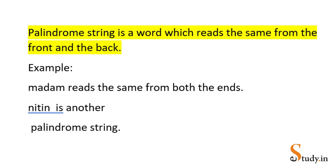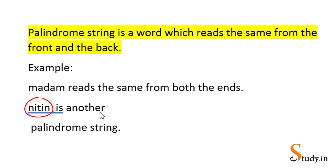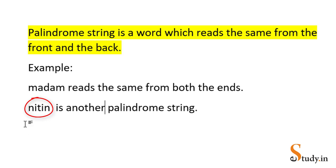Hi everyone, welcome back. This is the fourth video on strings. In this video we'll write a program to check if a string is palindrome or not. A palindrome string is a word which reads the same from the front and the back. For example, 'madam' reads the same from both ends, and 'Nitin' is also a palindrome string.